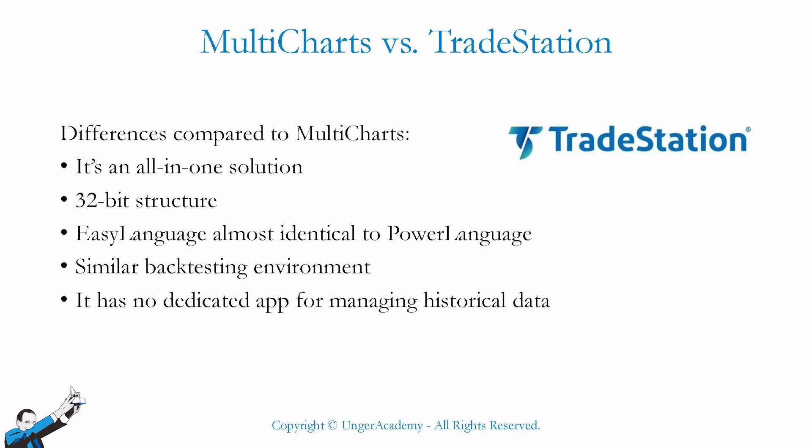The last difference concerns the price. The lifetime license of MultiCharts costs $1,497, to which you must add $499 if you want the ASP extension — namely the Advanced Strategy Pack that includes Portfolio Trader, which isn't included in the basic version. On the other hand, TradeStation is provided free of charge to those who open an account with TradeStation.